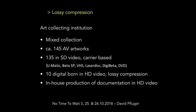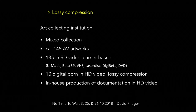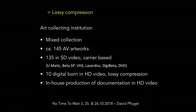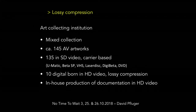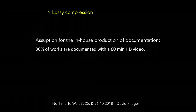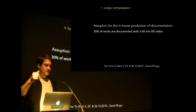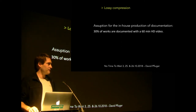I'm giving an example of an art-collecting institution in Switzerland. They have a mixed collection with about 145 audiovisual artworks — 135 SD video carrier-based, Umatic, etc. — 10 are digital-born in HD video, digital-born in lossy compression. They also have an in-house production of documentation in HD video: recording talks, interviews, documentation of complex artworks. They're producing footage connected to certain artworks. I'm assuming this in-house production will produce one hour of HD video for about 30% of the artworks.